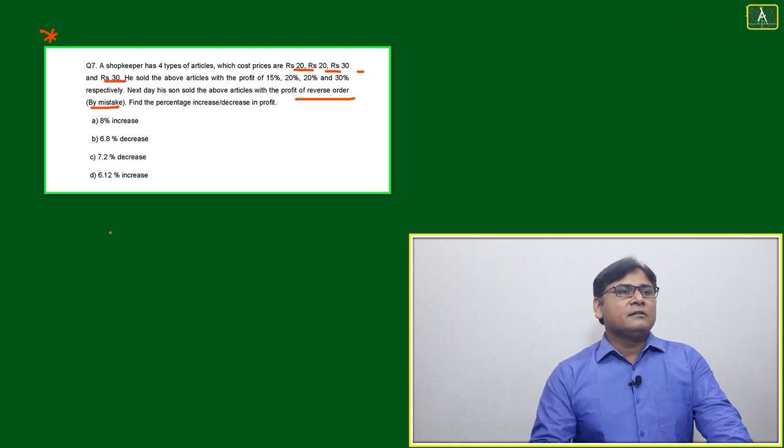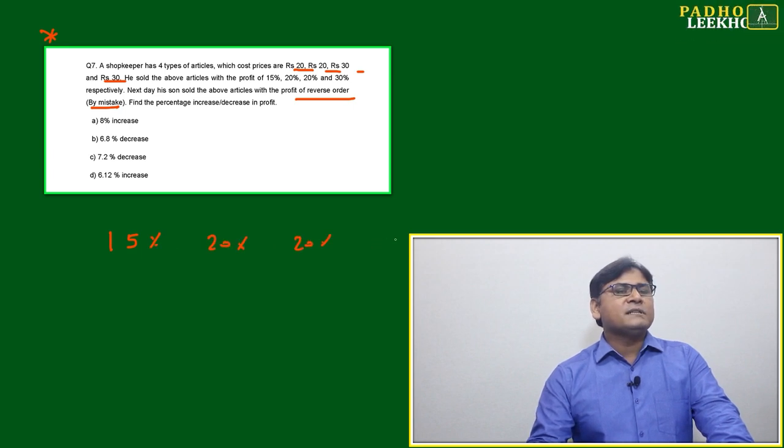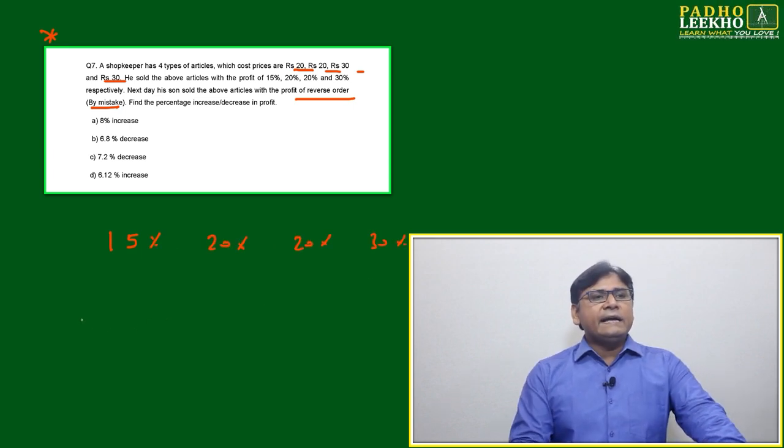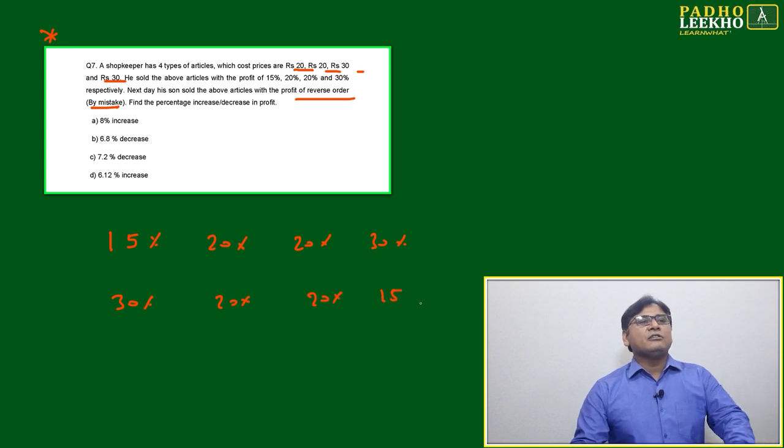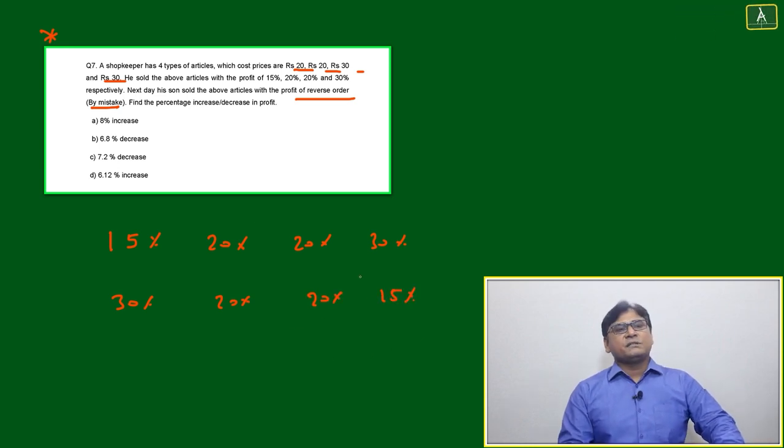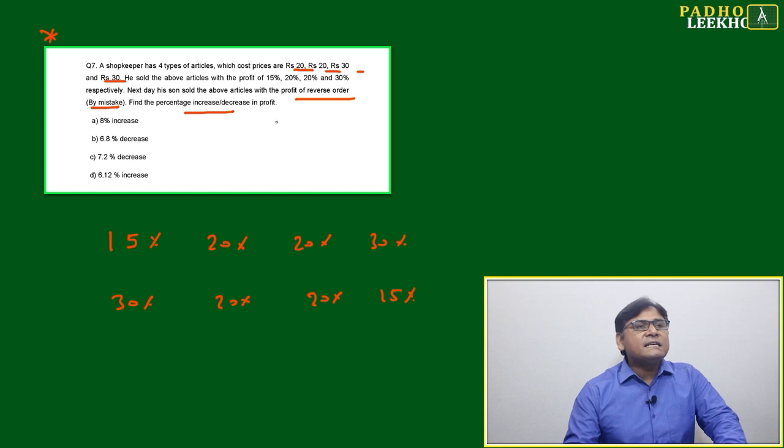First day, the father sold at 15%, 20%, 20%, and 30%. Next day, his son sold in reverse order. Means 30% will come here, the middle numbers are 20, 20 only, so after changing it will not change.